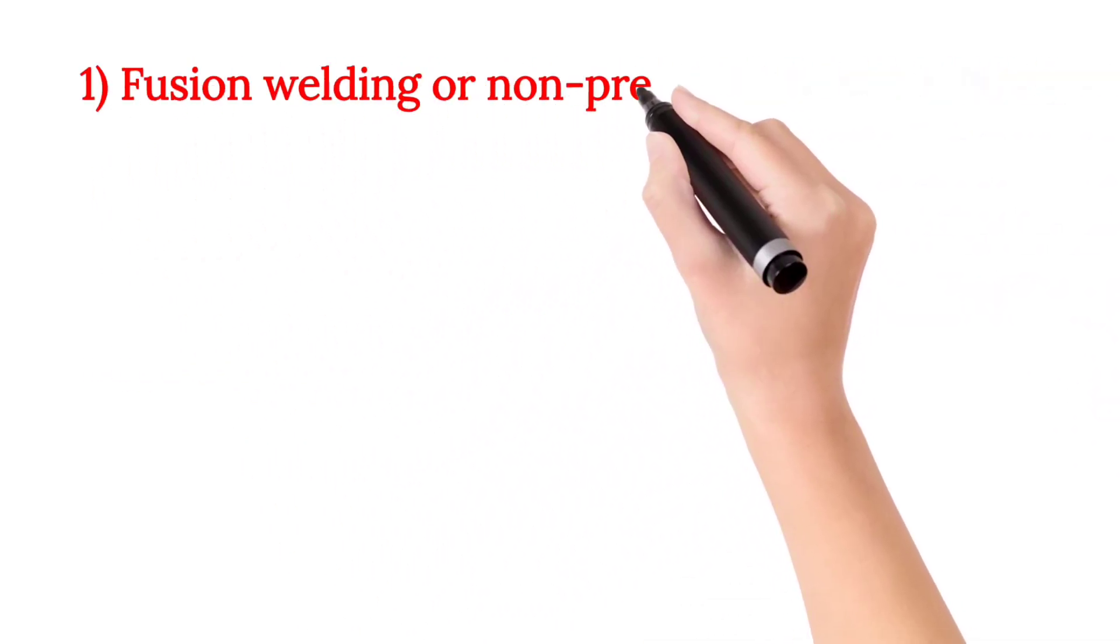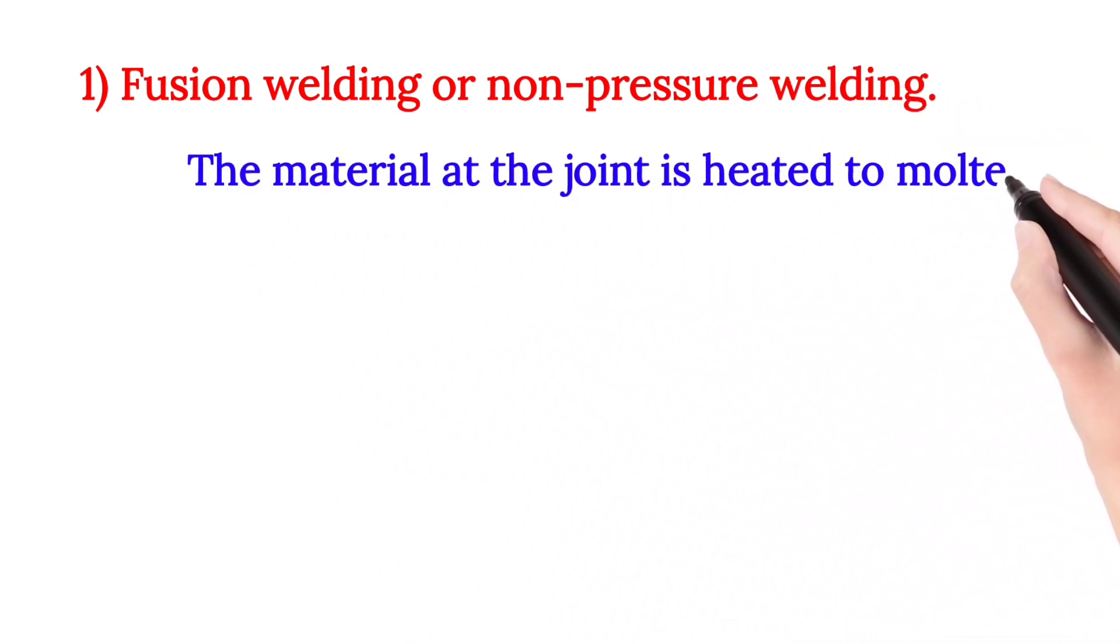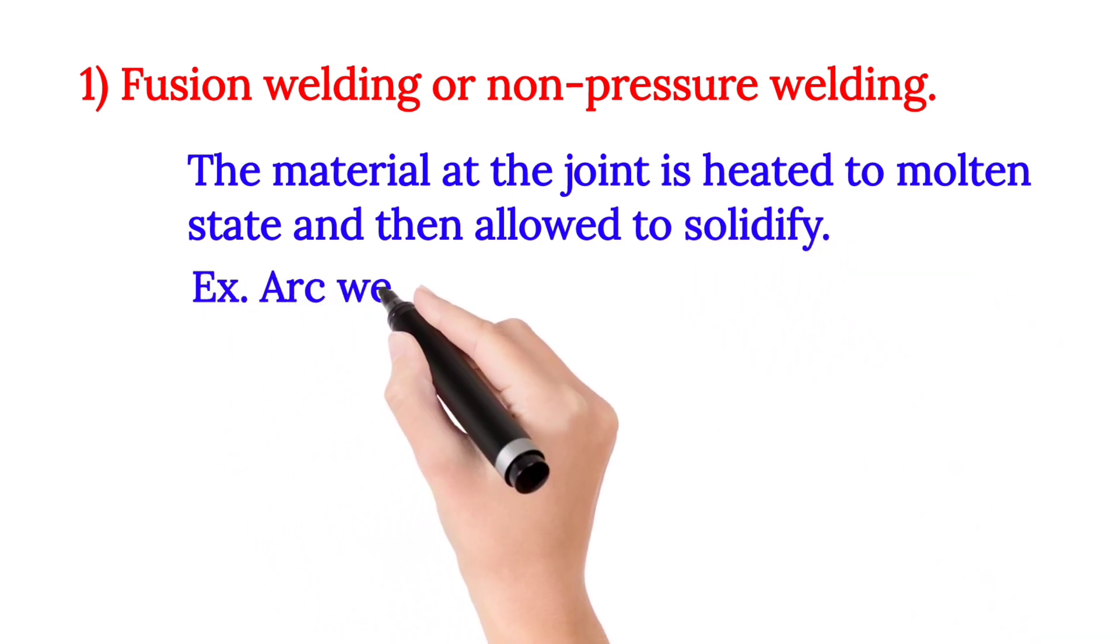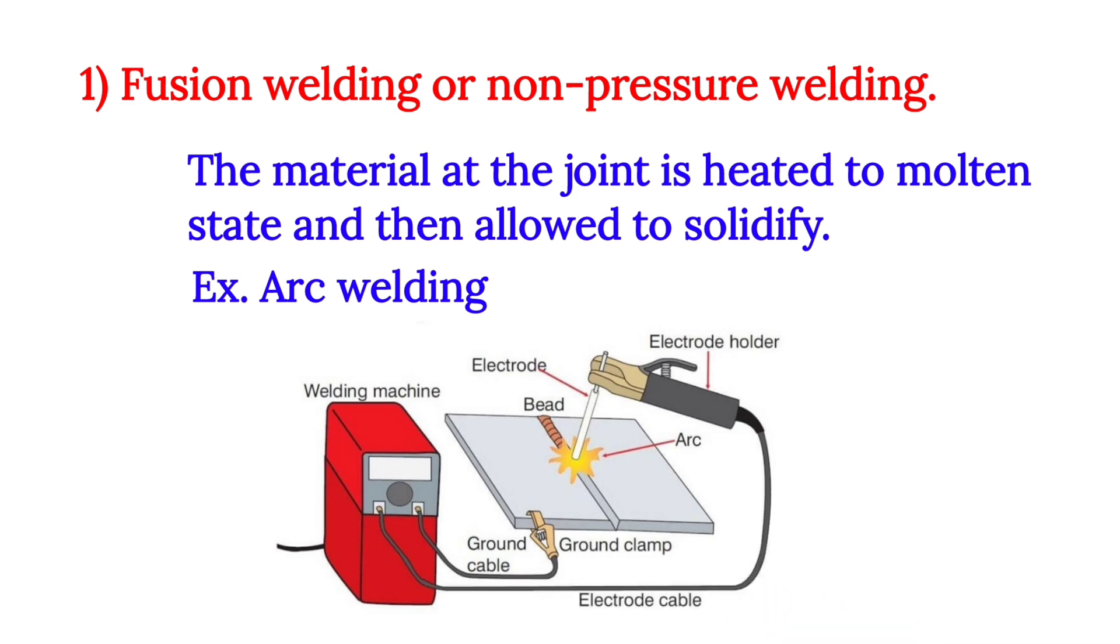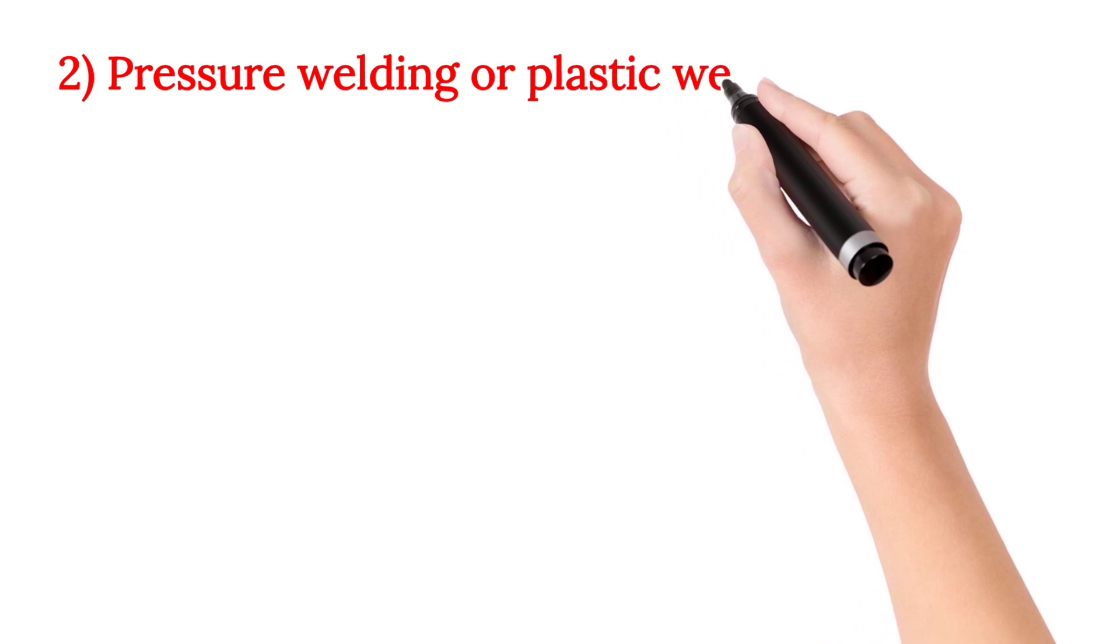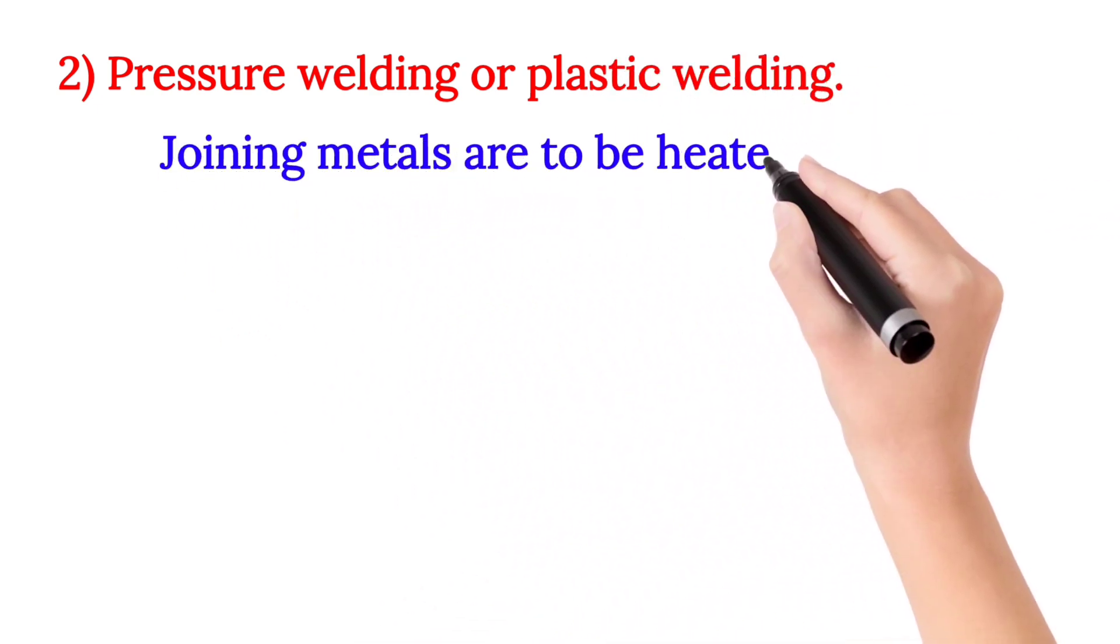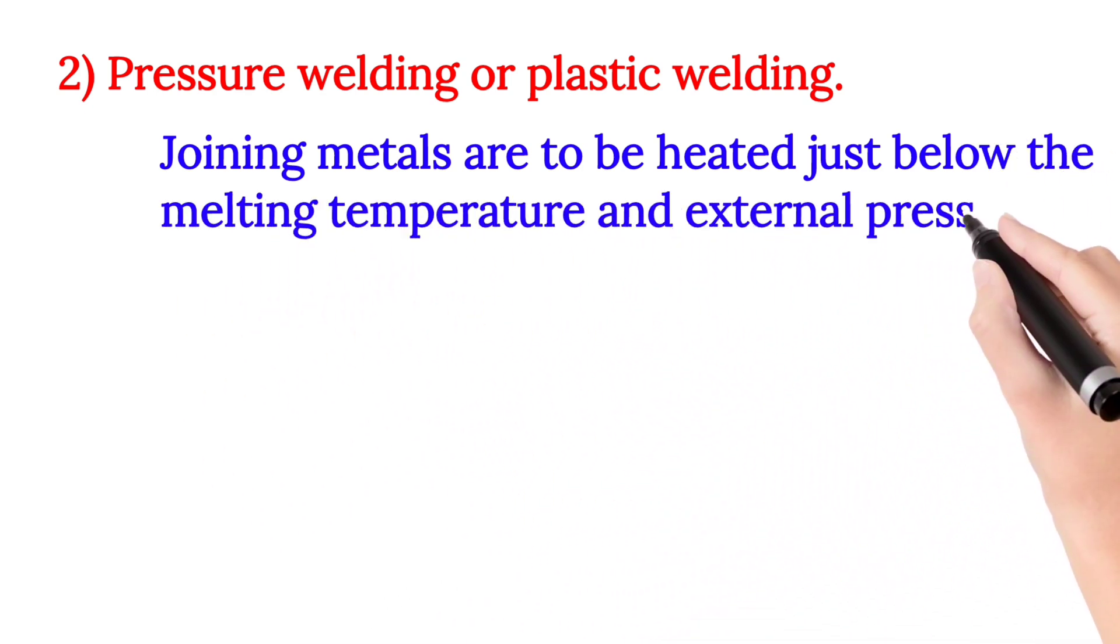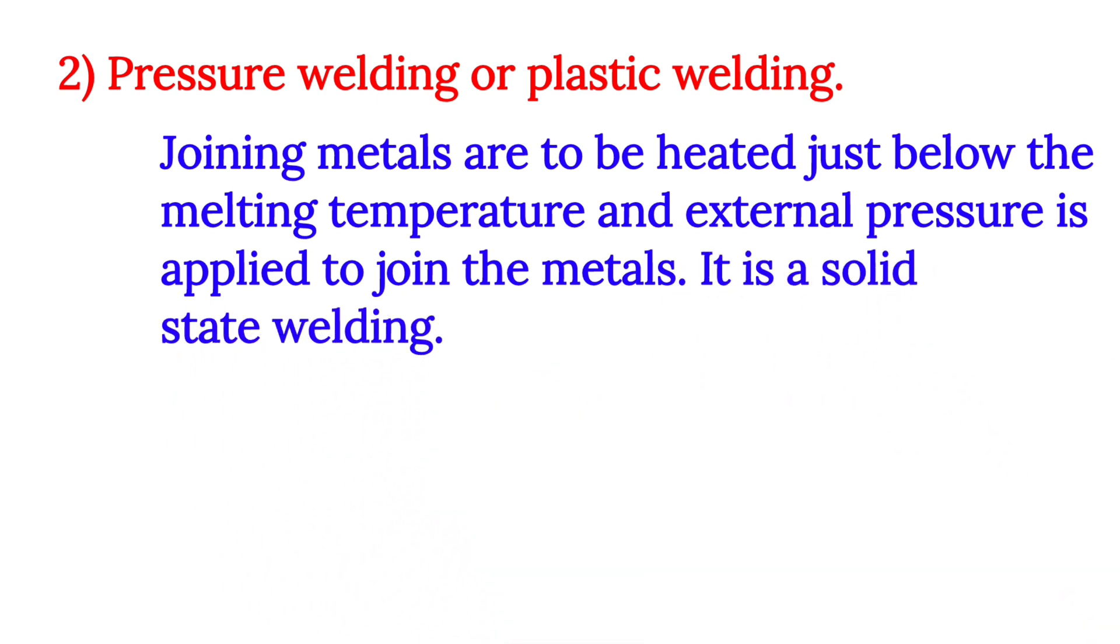Number 1: Fusion welding or non-pressure welding. The material at the joint is heated to molten state and then allowed to solidify. Example: arc welding. Number 2: Pressure welding or plastic welding. Joining metals are to be heated just below the melting temperature and external pressure is applied to join the metals. It is a solid state welding.